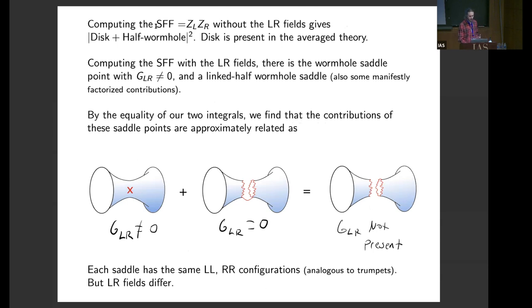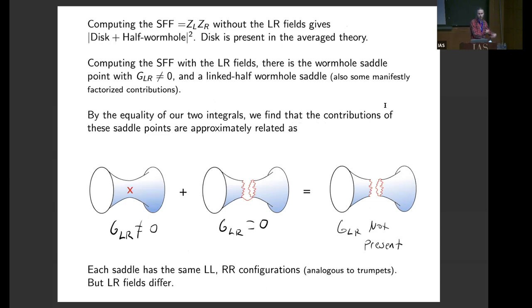We'll compute the spectral form factor Z_left times Z_right without the LR variables. Our conjecture is that there are saddle points corresponding to the disk and the half wormhole, such that the spectral form factor takes the form (disk + half wormhole)^2. On the other hand, we can compute the spectral form factor with the LR variables — there's a wormhole saddle point with G_{left,right} ≠ 0, and a linked half wormhole saddle point with G_{left,right} = 0. By the equality of these two integrals, we can infer that the wormhole and linked half wormhole saddle points are related to the unlinked half wormholes.